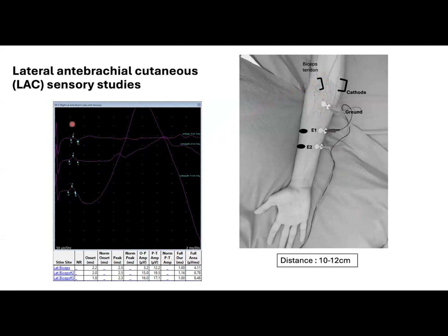The first tracing represents understimulation, where we see a small amplitude SNAP. In the second tracing, we see the supramaximal stimulation. And in the third tracing, where we increase the stimulus from 8 to only 11 mA, we got this big motor artifact.